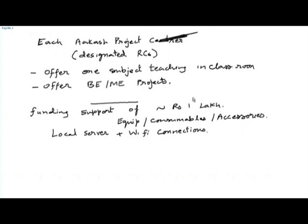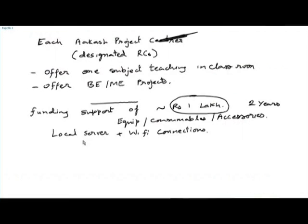I can now tell you the purpose of my advising you not to spend money on this. This limited amount of rupees one lakh is available for funding every Aakash centre for the entire duration of two years. If we consume these funds installing a server and Wi-Fi connections, we will have no funding support available for the rest of the two years.